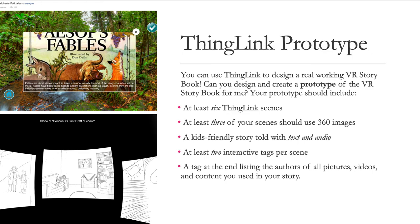Your ThingLink prototype: you can use ThingLink to design a real-working VR storybook. Can you design and create a prototype of the VR storybook for me? Your prototype should include at least six ThingLink scenes, at least three of your scenes should use 360 images, a kids-friendly story told with text and audio, at least two interactive tags per scene, and a tag at the end listing the authors of all pictures, videos, and content you used in your story.